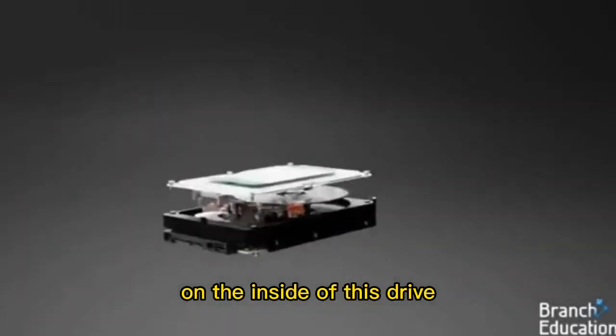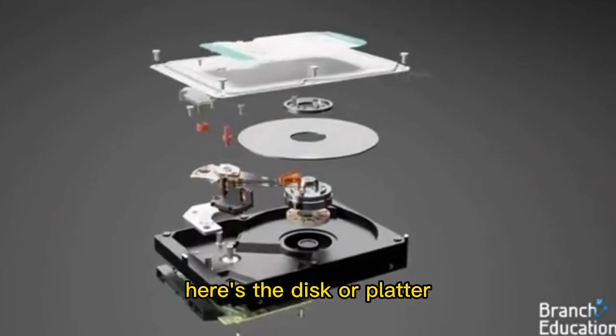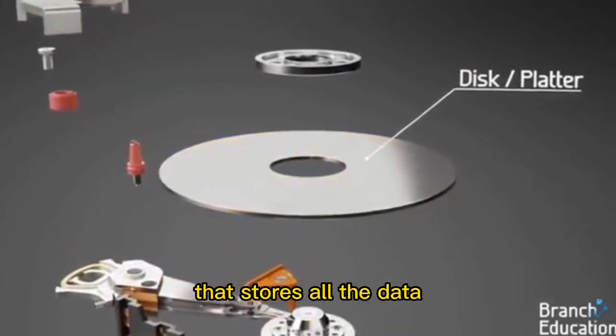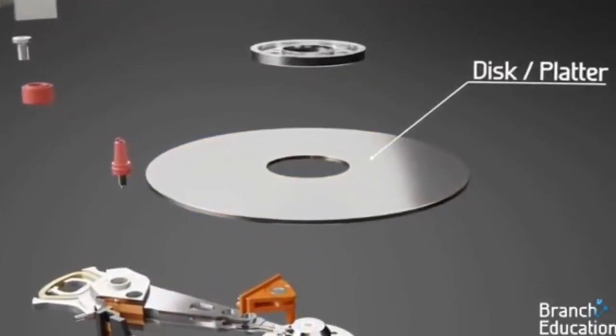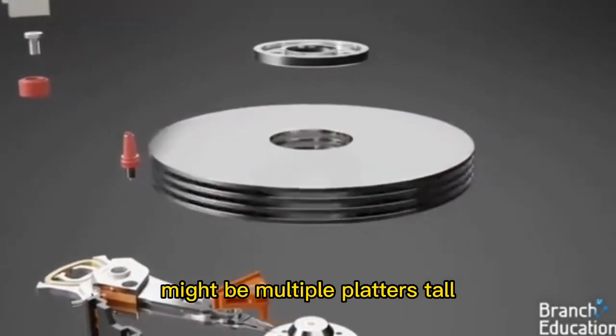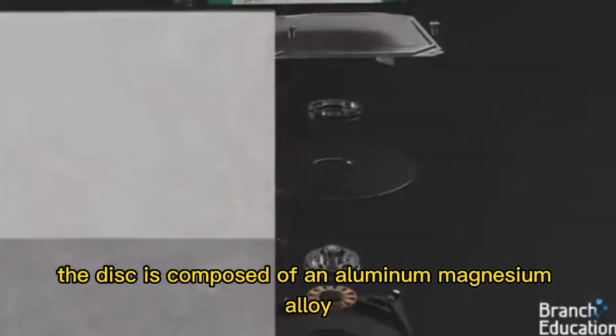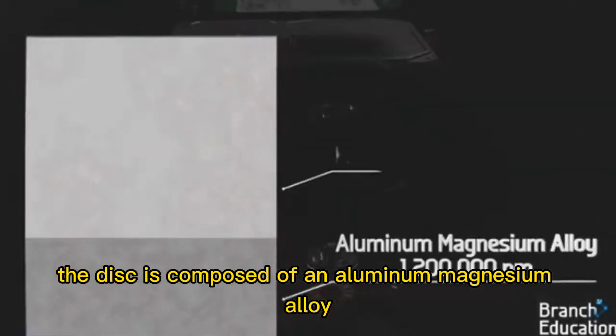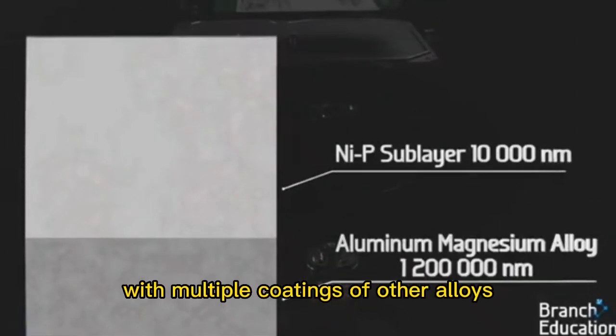On the inside of this drive we find a variety of components. Here's the disk or platter that stores all the data, and depending on the storage capacity of the drive there might be multiple platters tall. The disk is composed of an aluminum magnesium alloy with multiple coatings of other alloys.